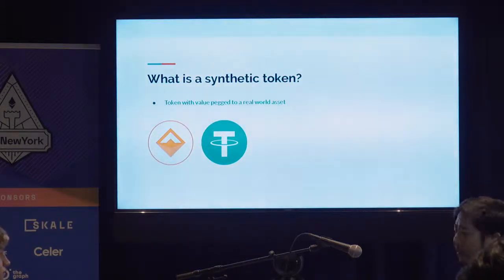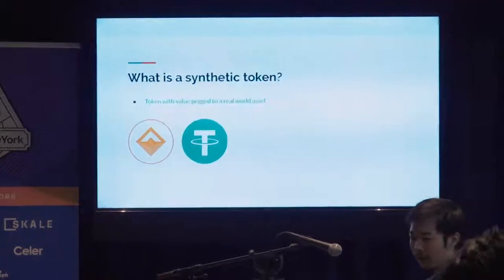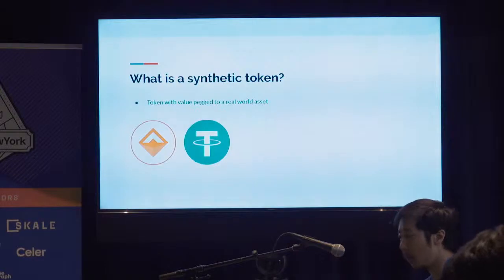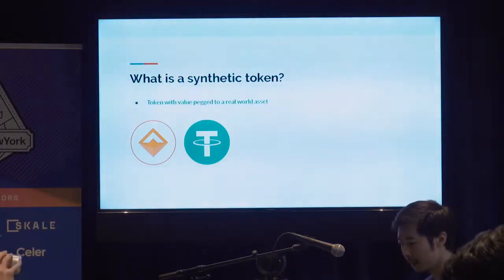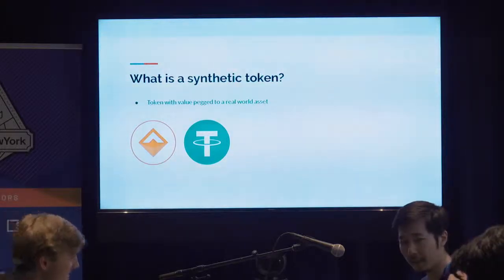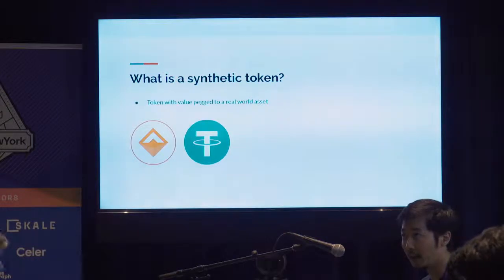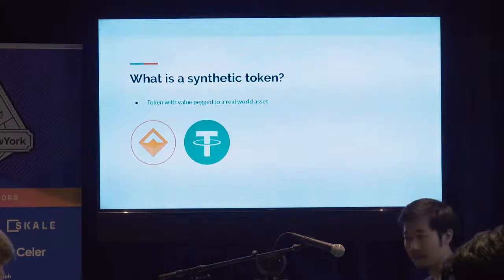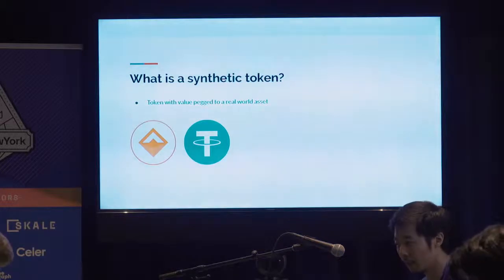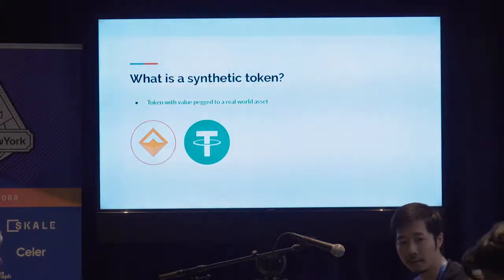There are all kinds of different ways to structure a synthetic token. Tether is backed by a central counterparty — supposedly — and there's less transparency. DAI is backed by a smart contract: you can see the collateralization ratio, and the rules for liquidation are all on the smart contract, so you can audit it yourself.